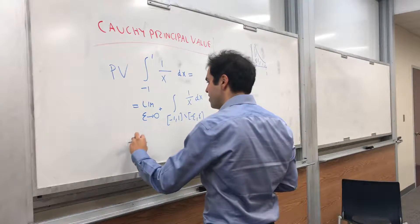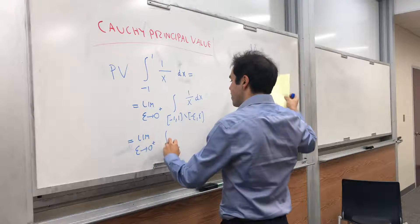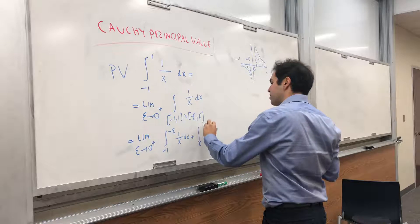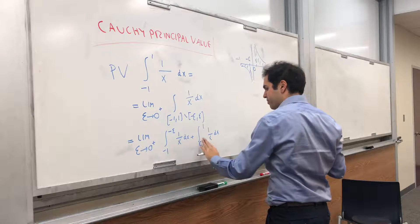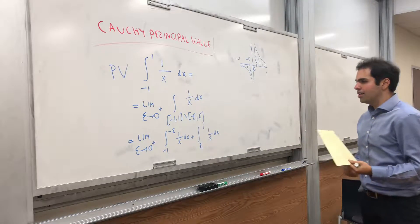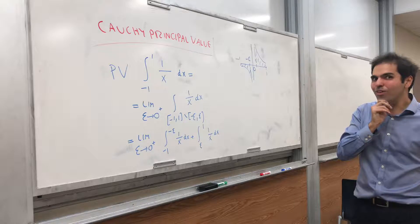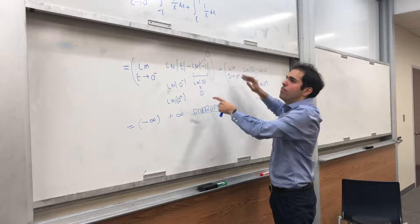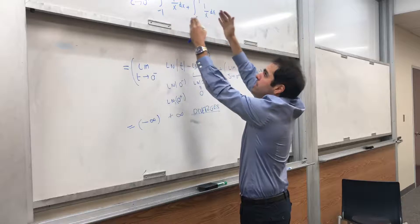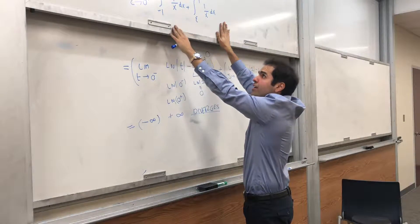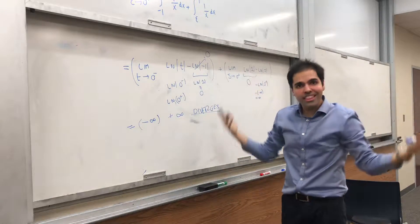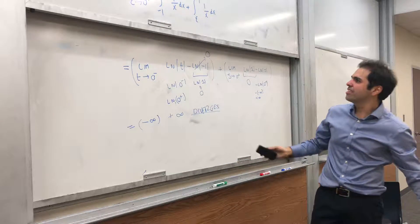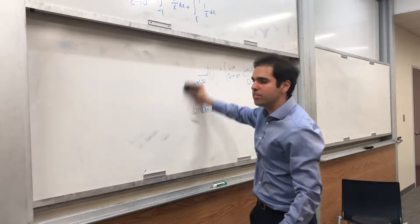And what this is, it is limit as epsilon goes to 0 plus. Here it's integral from minus 1 to minus epsilon, 1 over x dx, plus integral of epsilon to 1, 1 over x dx. And you might say, well, what's the difference? The difference is really subtle. In the previous example, you're taking two separate limits. So you're splitting this into two limits, and you take the two separate limits. Here, you're first summing them up, and then you take limits. And it turns out this is slightly less general, but it gives you at least a concrete answer.